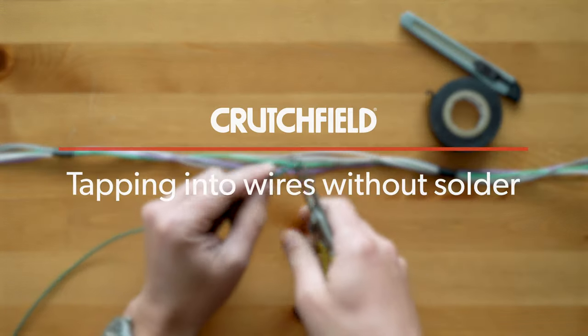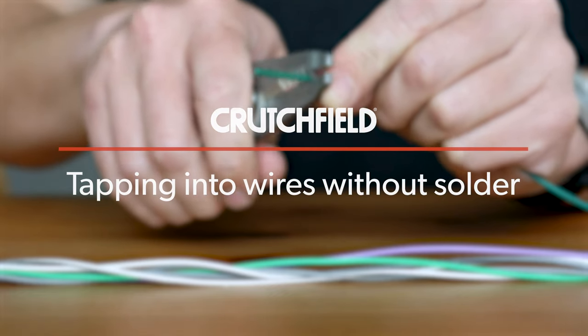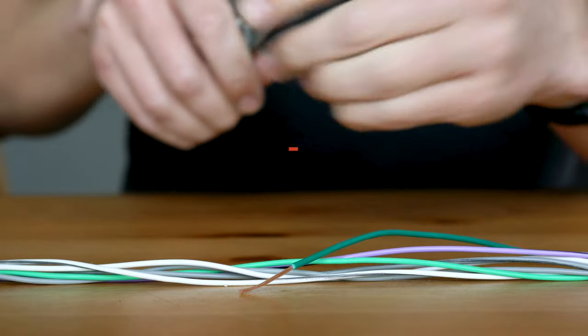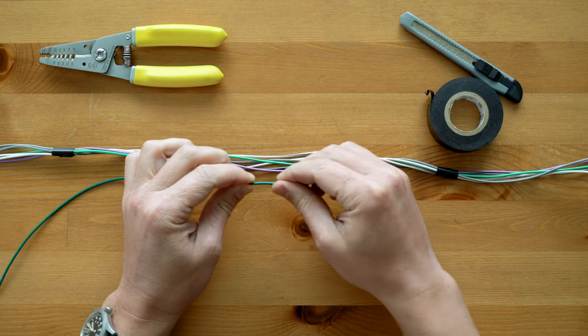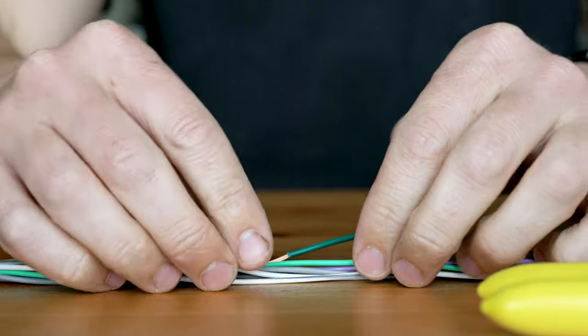This is how you tap into a wire without any special connectors or solder. Start by stripping back about three-quarters of an inch to an inch of insulation material from the end of your wire, exposing the copper strands underneath.